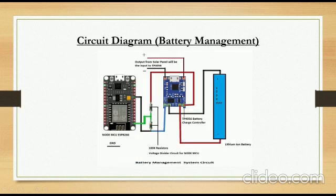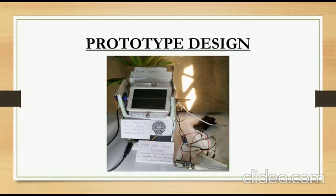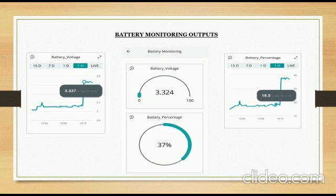This is the circuit diagram of our battery management part. This is how our prototype looked like. And these are the outputs that we have received on the cloud server. Here, we can see the battery voltage and battery percentage. And we can also see the graphs of the battery voltage and percentage.